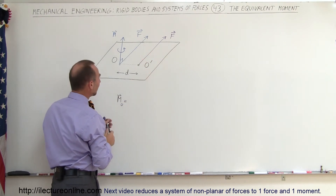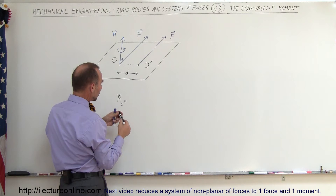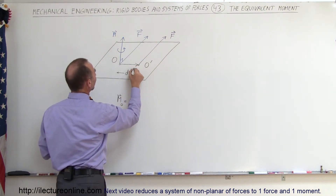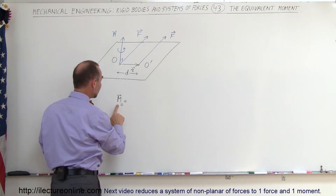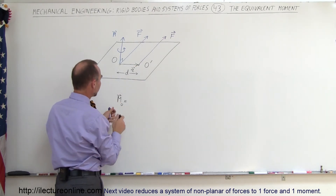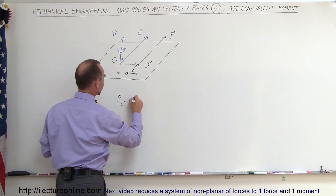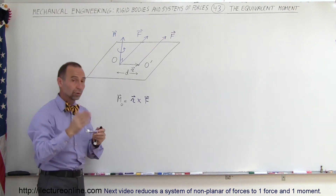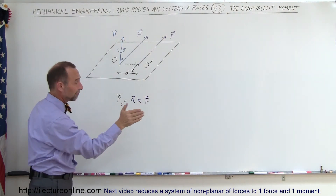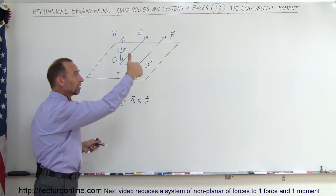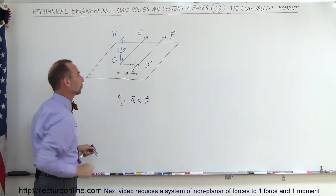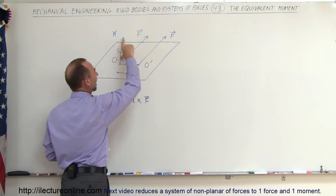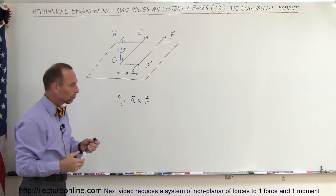We can find that by drawing an R vector. This moment must therefore be equal to the product of the R vector multiplied times the force. If you use your right-hand rule — point your fingers in the direction of the R vector, turn your fingers in the direction of the force — you will have a moment perpendicular to the plane. So the effect here will be the same as the moment we have there; they should be equivalent.